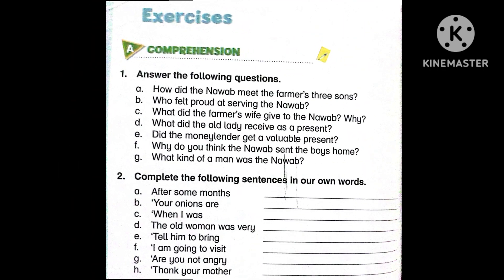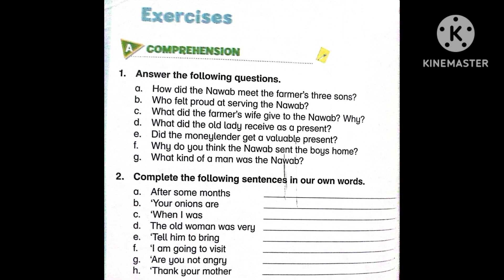The first section of the exercise is Section A: Comprehension. Question number one is: Answer the following questions. Here we have questions A through G given.